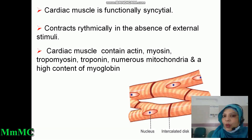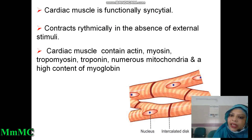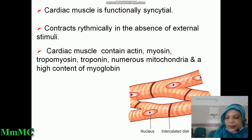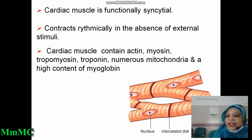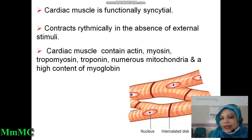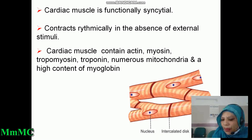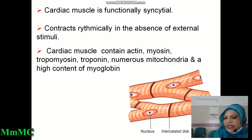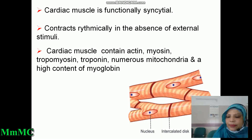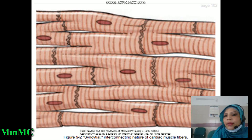Cardiac muscle is functionally syncytial. The cardiac muscles contract rhythmically in the absence of any external stimuli. Cardiac muscle contains actin, myosin, tropomyosin, troponin, and numerous mitochondria and a high content of myoglobin — this is very important for MCQ questions. As shown in the figure, a single nucleus is present in each cardiac muscle cell and there is the intercalated disc — that dark area between cells — which is nothing but the cell membrane. In the intercalated disc there are gap junctions, which are permeable pores.